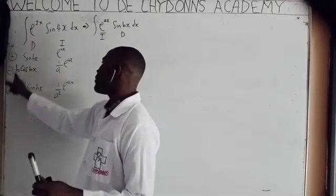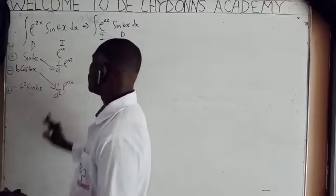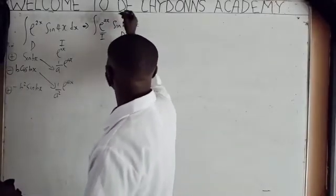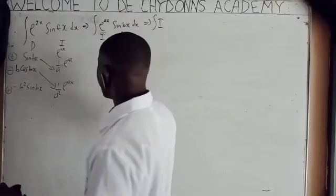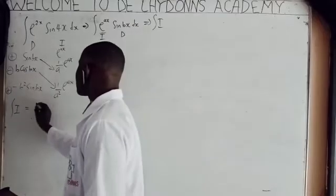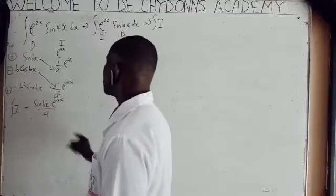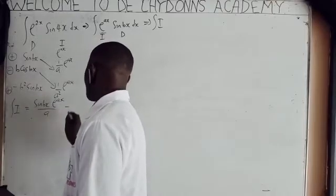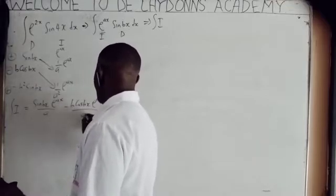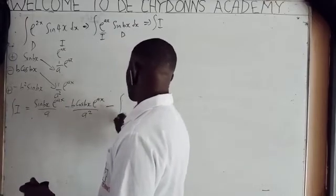The plus, minus, plus signs we are putting as the sign column. Then connect this to this, and connect this to this. Multiply these two pairs with the symbol of integration. Then, calling everything here integration I, we say: integration I equals sine bx times exponential ax all over a, then minus b cosine bx times exponential ax all over a squared. Then plus times minus gives minus, so the last term is minus the integral.